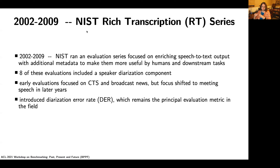Where we really started to see a big influx of research effort was in the early-to-mid 2000s, 2002 to 2009, corresponding to the NIST Rich Transcription series — the RT series — which was focused on enriching speech-to-text output with additional metadata to make that output more useful for humans and downstream tasks, such as disfluencies, sentence units, and speaker labels. The first couple of evaluations focused on conversational telephone speech and broadcast news, but this shifted in later years to be exclusively focused on the meeting domain. This evaluation also introduced diarization error rate, which has remained the principal evaluation metric in this field for nearly 20 years.